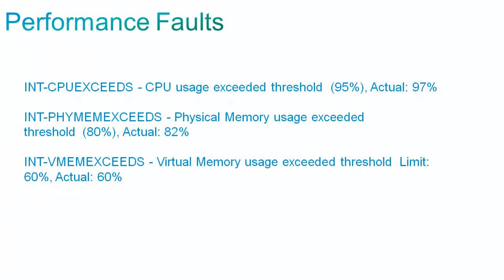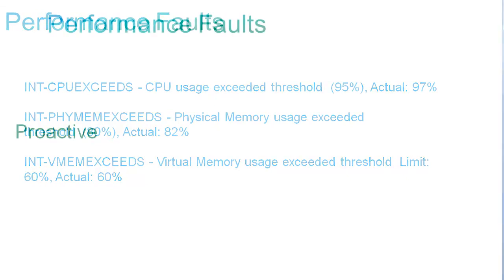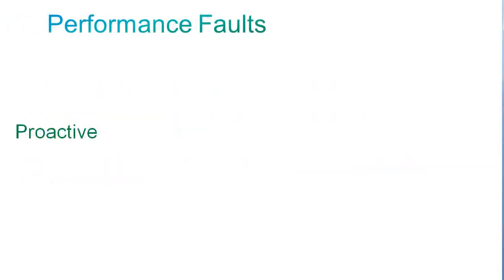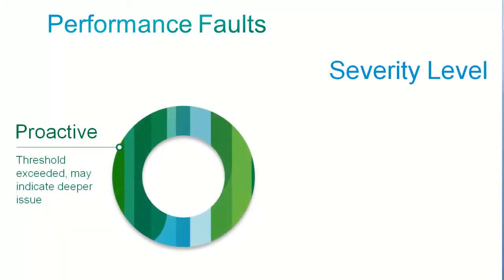It's important not only to have asynchronous alarms like syslogs, traps, and XML faults. It's also important to poll the device for performance statistics and set appropriate thresholds so you receive events when those thresholds are crossed. In this way, all performance faults are proactive and indicate various severity levels. Based on these severity levels, you can take appropriate action.